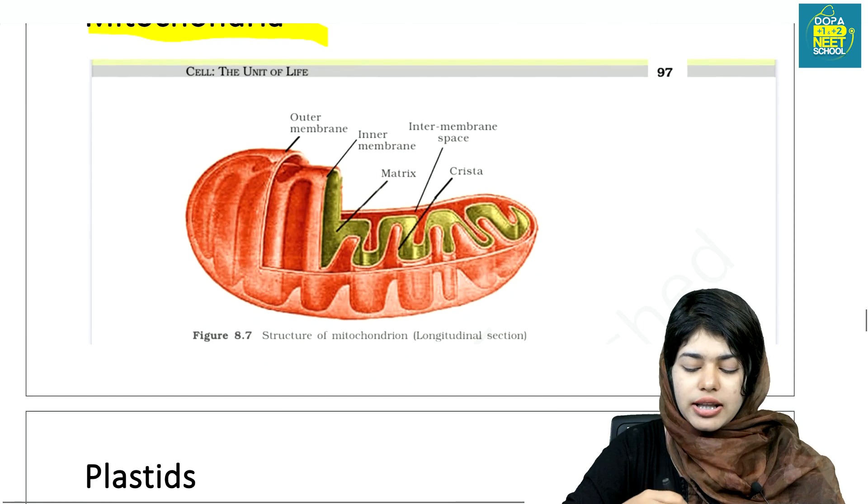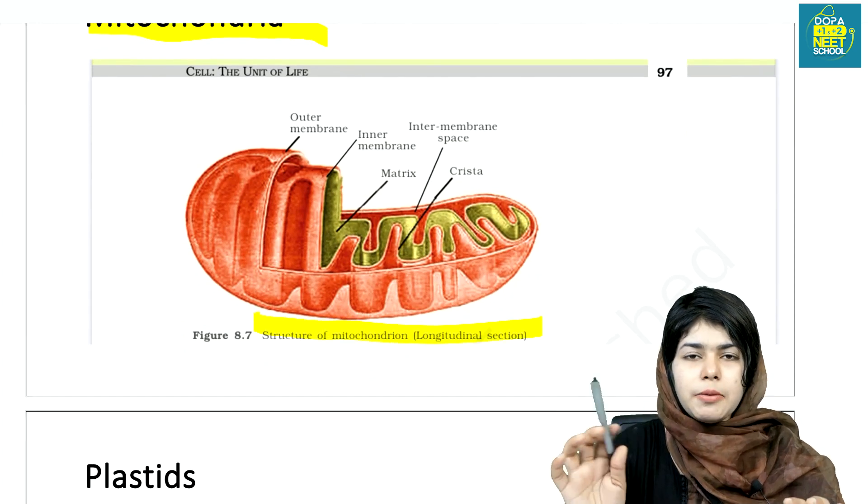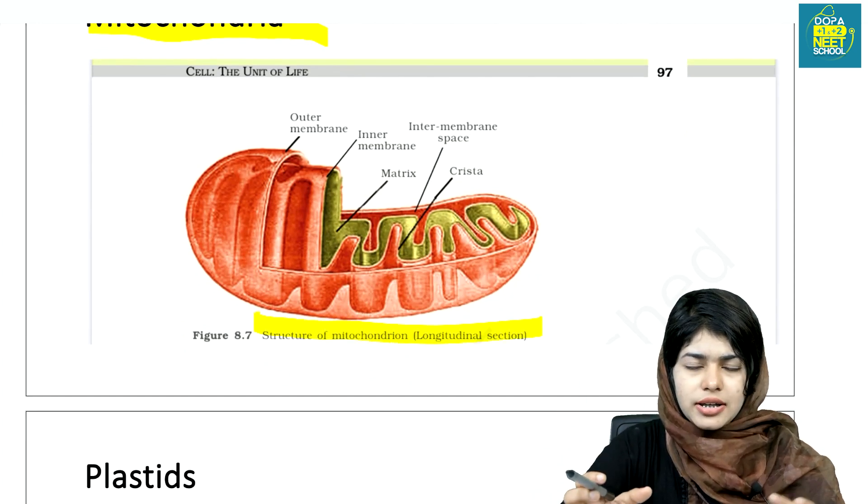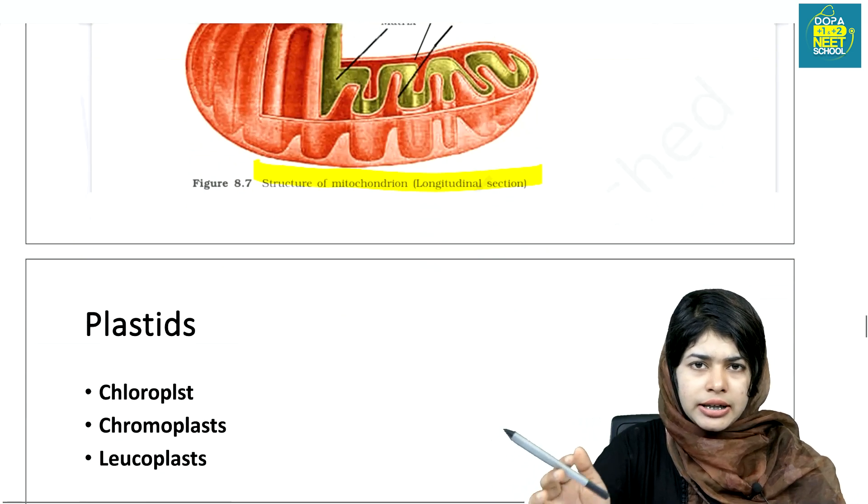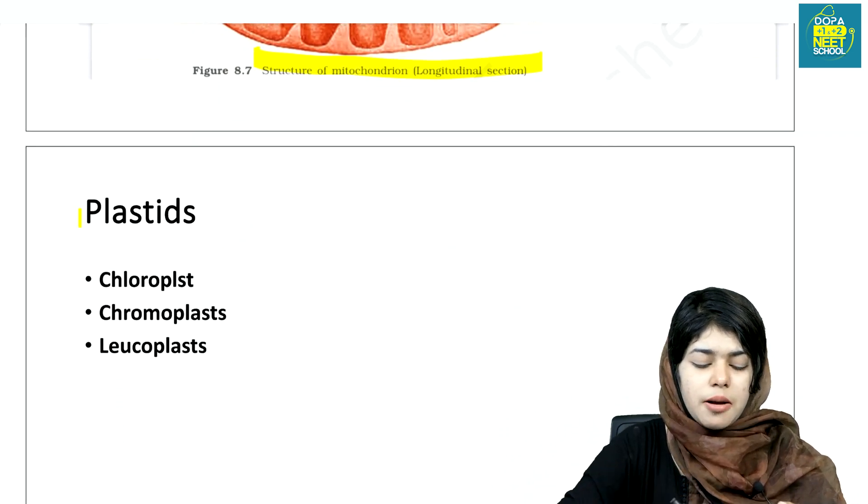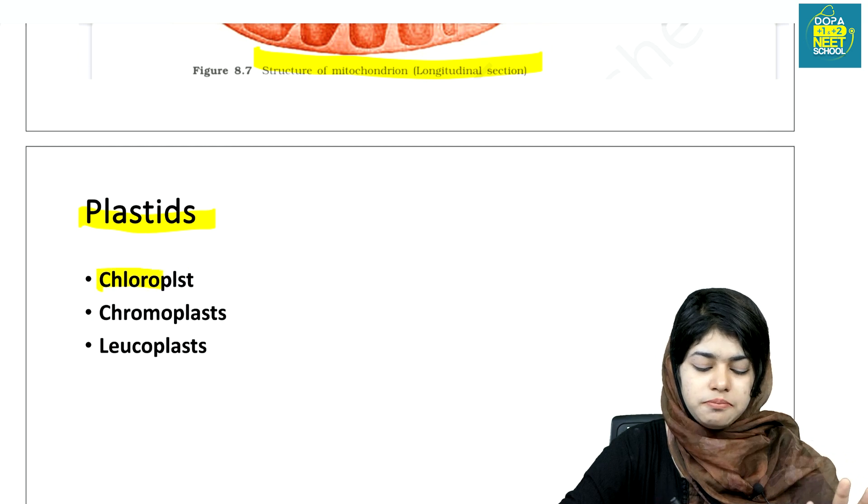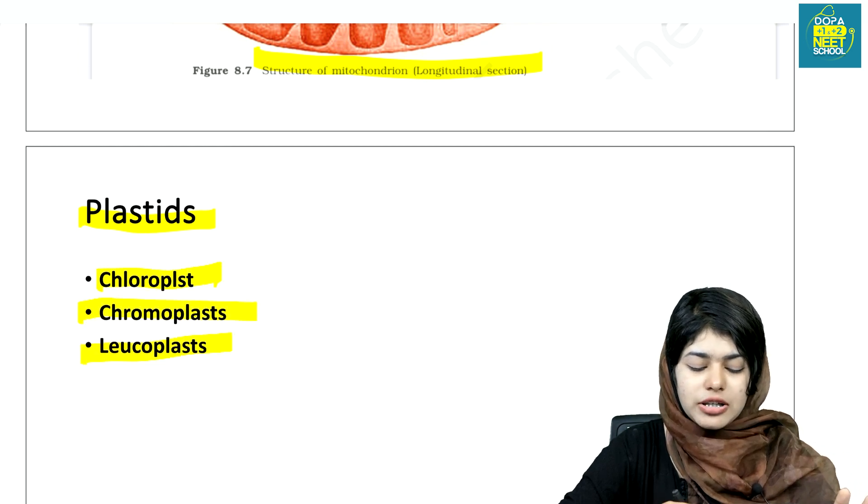Mitochondria are the powerhouse of the cells. They have double membrane, matrix, and intermembrane space. Important for ATP generation. Plastids are of three types: chloroplasts, chromoplasts, and leucoplasts.